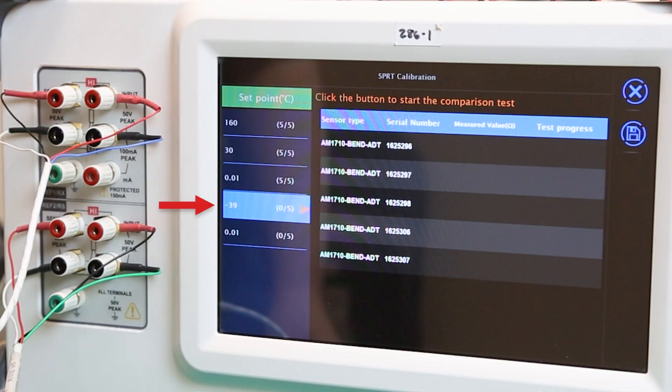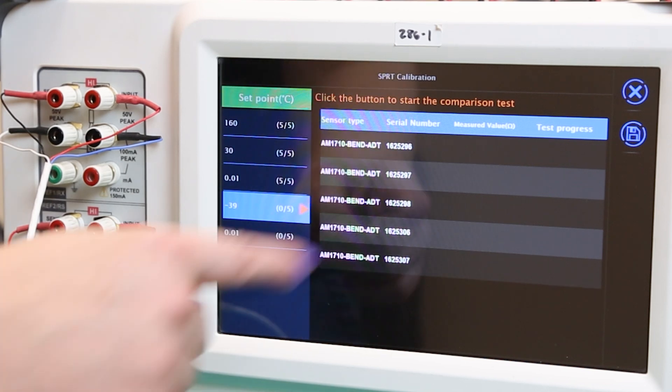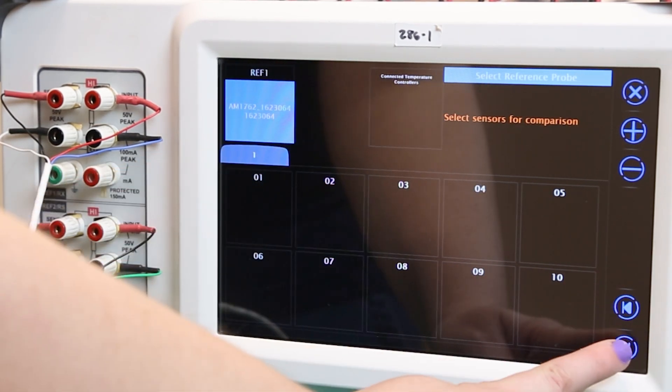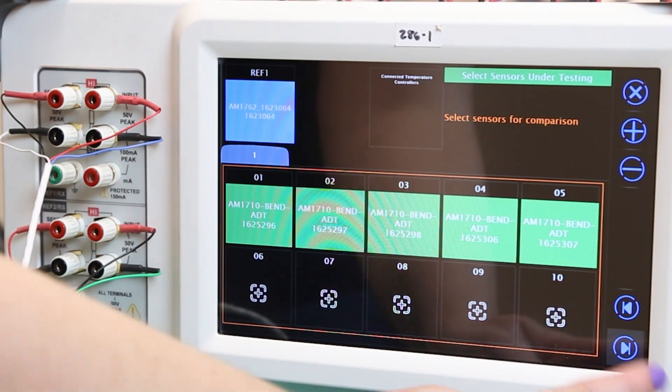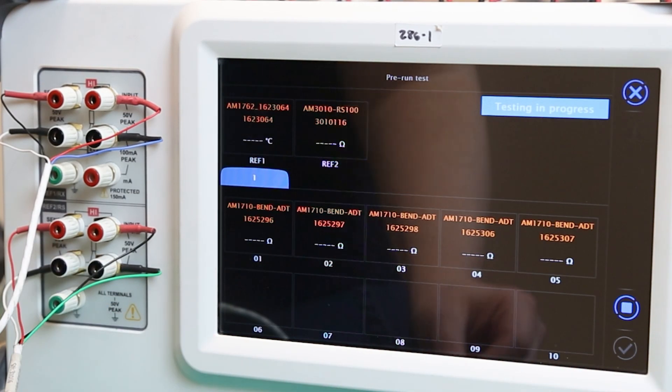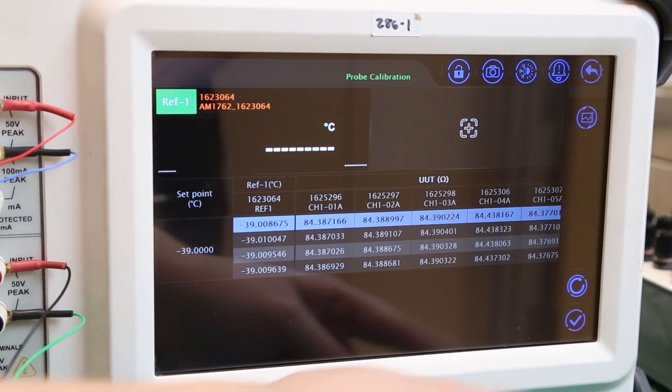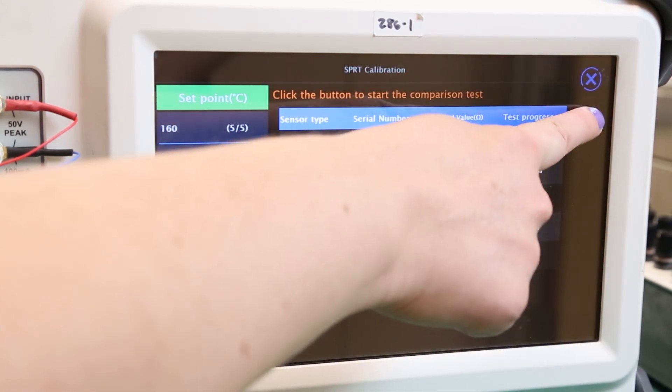Select the negative 39 degree calibration point on the left hand side of the screen, select the first probe, and again add all of the probes to their corresponding locations on the device. After pressing play, the test will complete automatically just like the last two comparison measurements. Save the test cache by selecting the save icon in the main calibration screen.